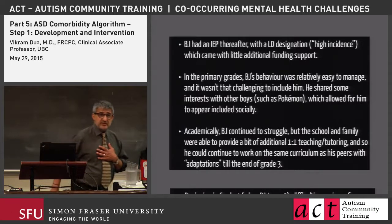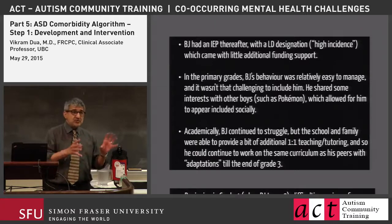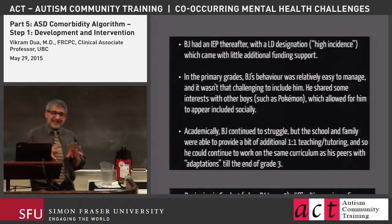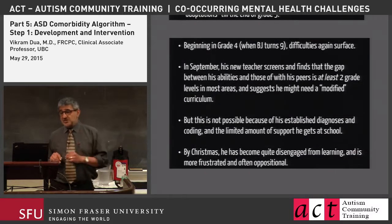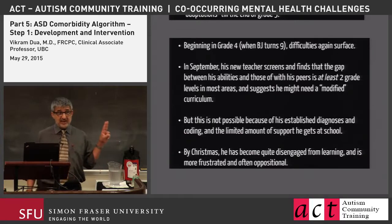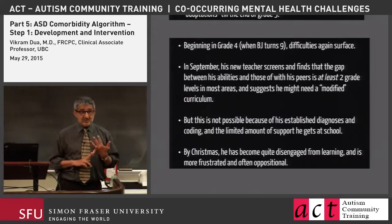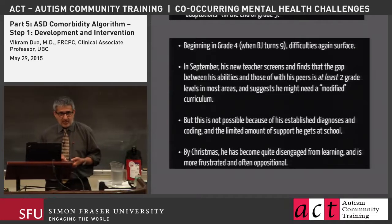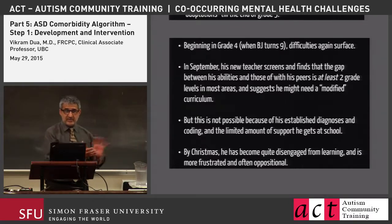In the primary grades, BJ was not hard to manage in the classroom. He could be included, had interests he shared with other boys — he was into Pokémon. Academically he was struggling, but the school and parents did some additional scaffolding and tutoring and got along for a couple of years. Around grade four when BJ turned nine, things started to get more problematic. The teacher said BJ was at least two grade levels below and needed a modified curriculum, but that wasn't possible given his existing diagnosis and lack of funding.